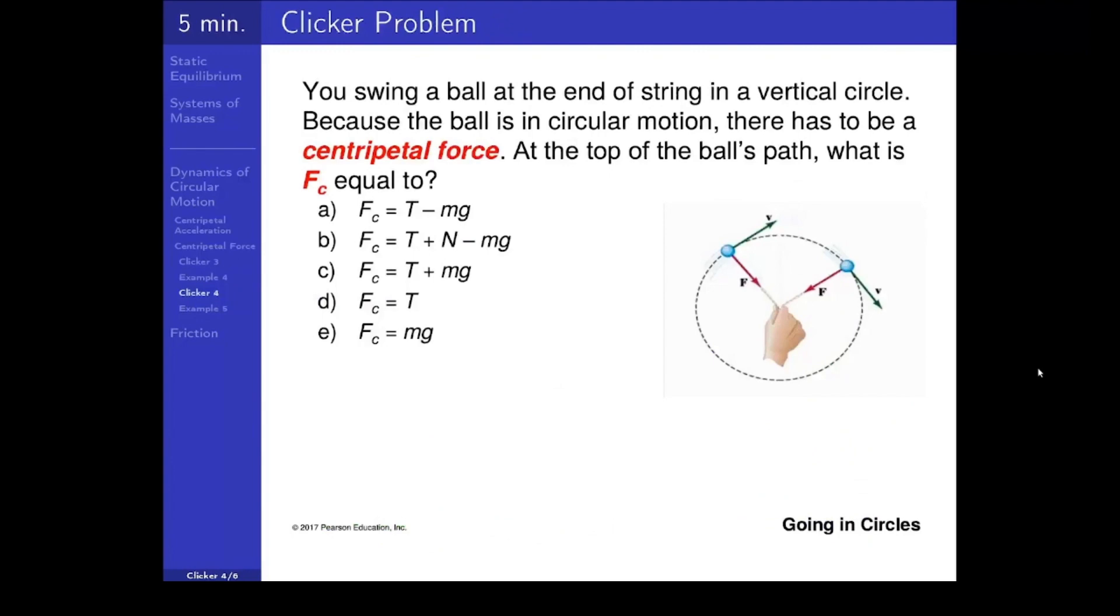Let's try another conceptual problem. You swing a ball at the end of a string in a vertical circle. Because the ball is in circular motion, there has to be a, quote, centripetal force. At the top of the ball's path, what is that centripetal force? Or in other words, what is that net inward force?